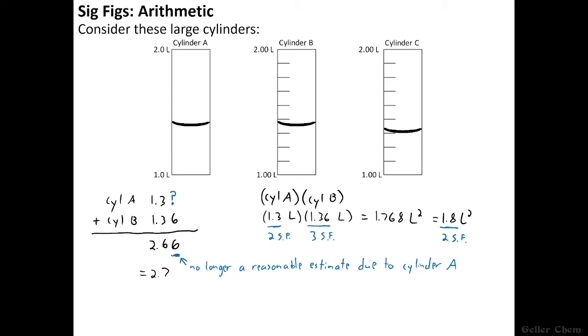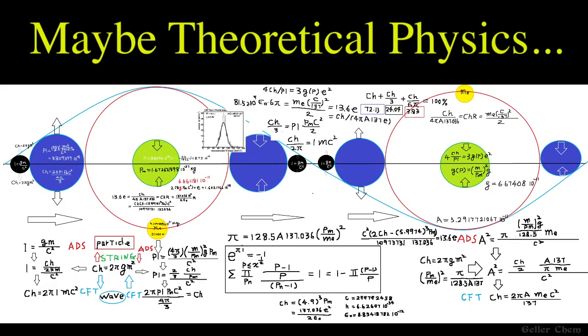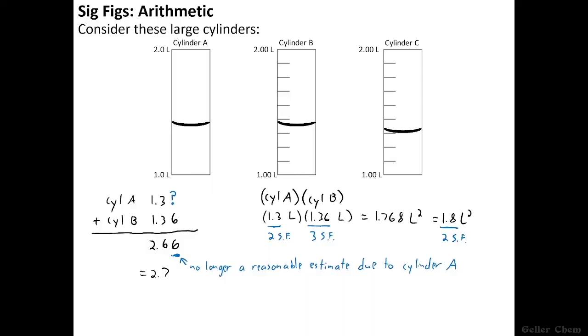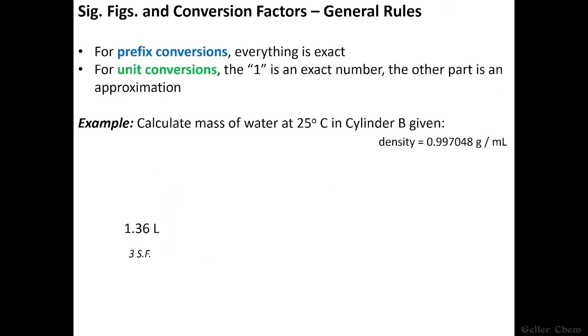Now the reason why multiplying two volumes together is such a silly thing to do is because we ultimately wind up with the unit liter squared, which is a six-dimensional unit, which is not something we would ever consider in a general chemistry class. But again, this was the simplest multiplication problem I could think to do with this situation. Now let's do something a bit more complicated and cover the very last point that I want to cover regarding mathematics and sig figs, which is how we deal with conversion factors and significant figures.